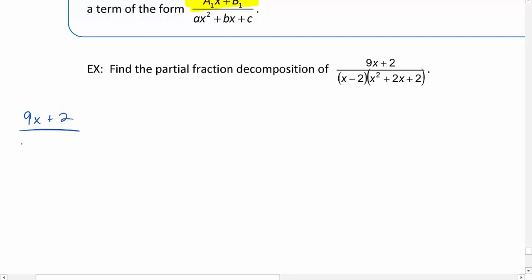9x plus 2 over x minus 2 times x squared plus 2x plus 2 is going to equal two different fractions, one having a denominator of x minus 2 and the other having a denominator of x squared plus 2x plus 2. Now for the numerators. The numerator should always be a degree less than the denominator. So the first fraction, the denominator is linear, so the numerator is going to be a constant.